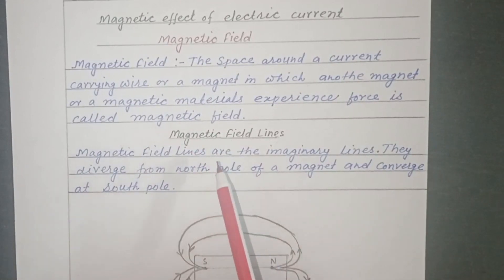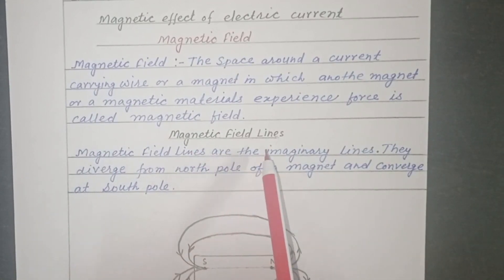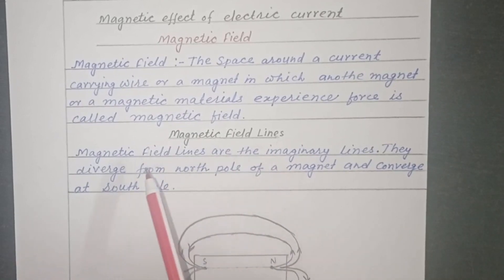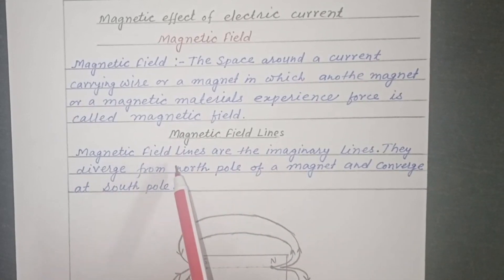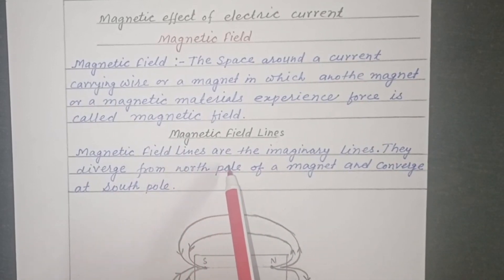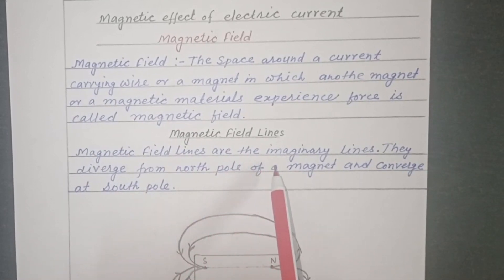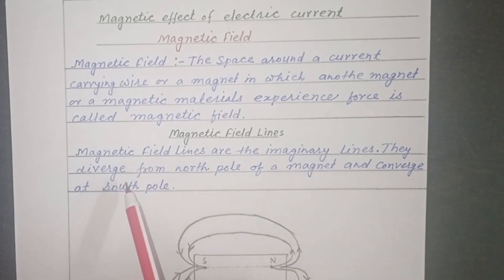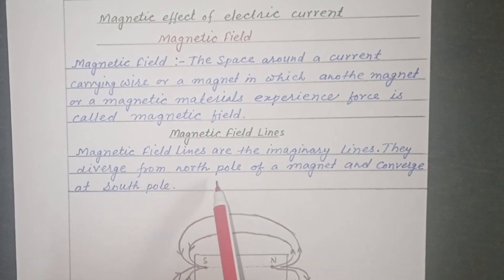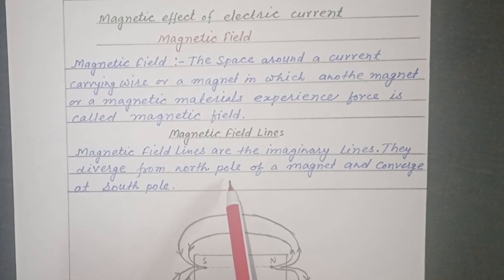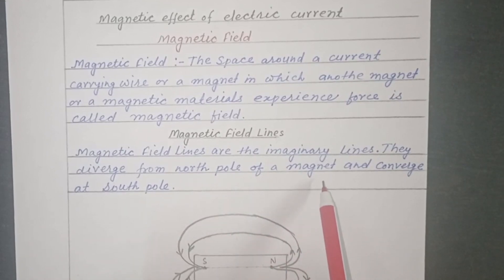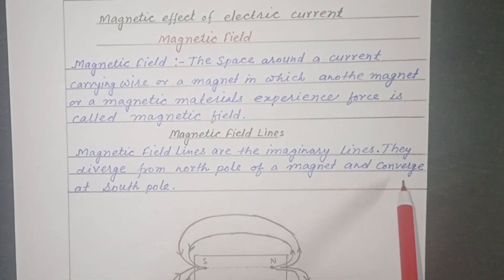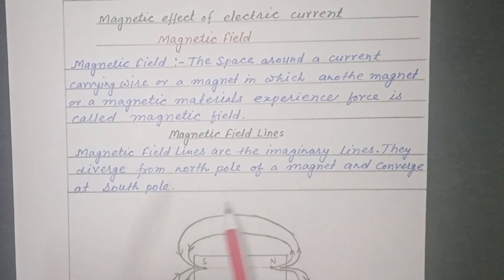Magnetic field lines are the imaginary lines. They diverge from the North Pole of a magnet and converge at the South Pole.